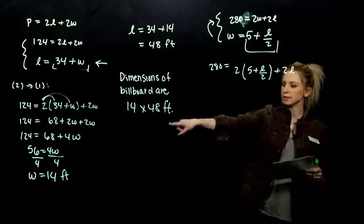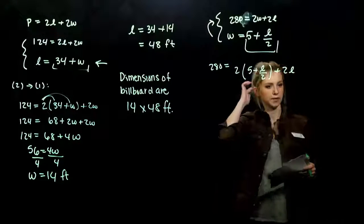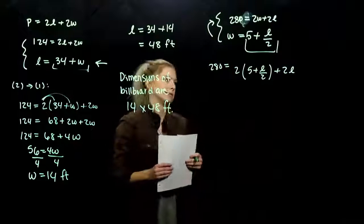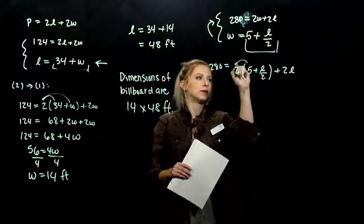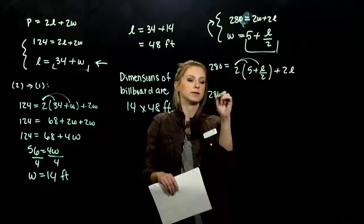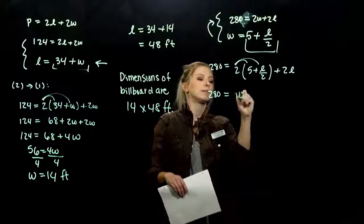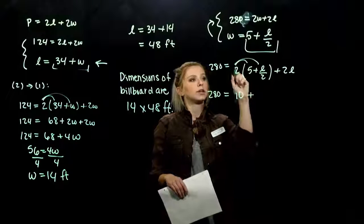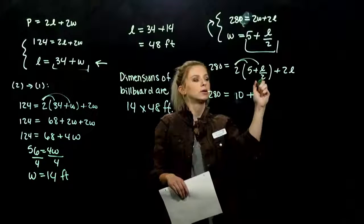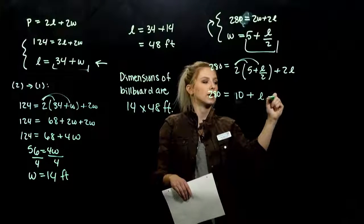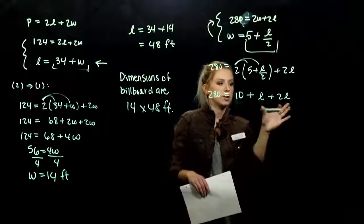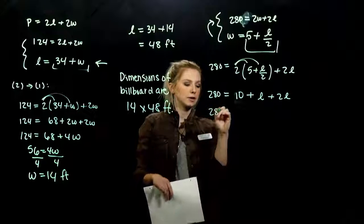So in the first case, we solved for W. In this case, we're solving for L. Totally fine. We will get both pieces. So let's start distributing to get rid of those parentheses. So 280 is 10, plus what value? 2 divided by 2 is 1. We're just going to be left with L. And I've got two L's, so we can combine those like terms.